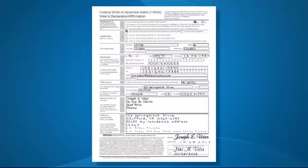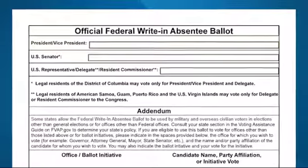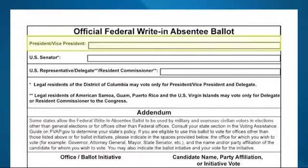After completing the Voter's Declaration and Affirmation page, you can then mark your absentee ballot. The FWAB may be pre-populated with ballot information. First, fill in your selection for President and Vice President. In the next box, fill in your selection for U.S. Senator.